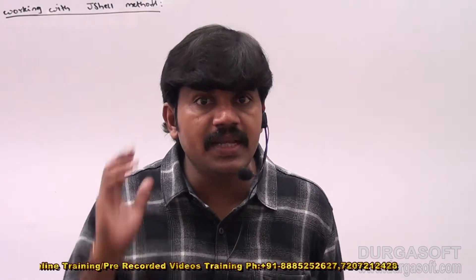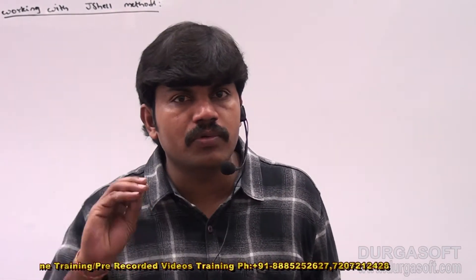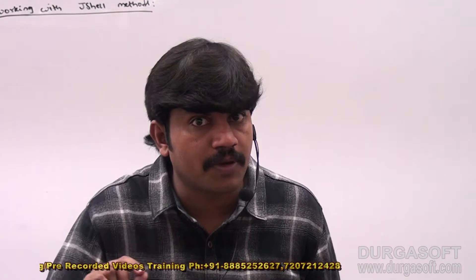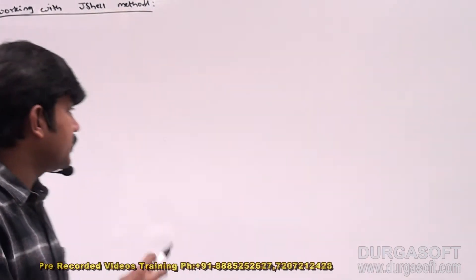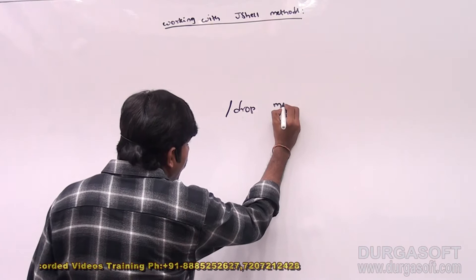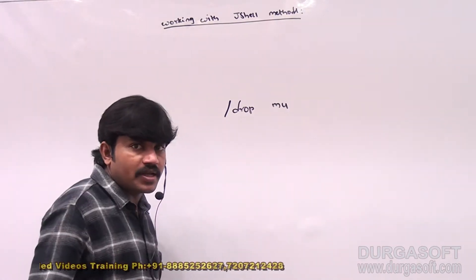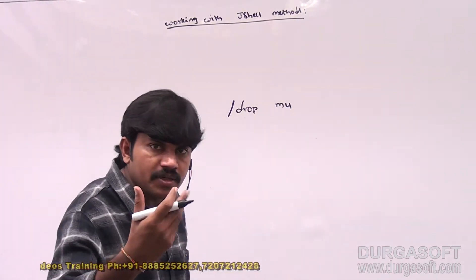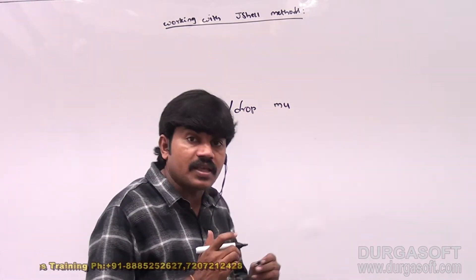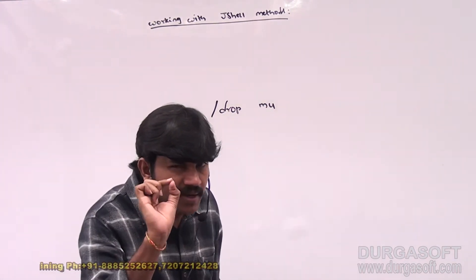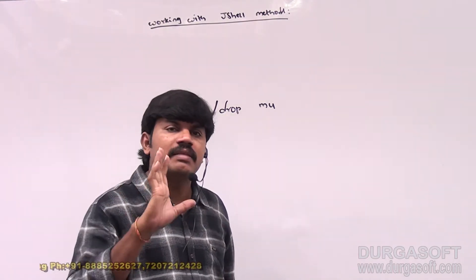How to delete or drop a particular method from the JShell? No problem — we can use the drop command. Use slash drop, for example slash drop m4, and m4 method will automatically be dropped. This method is not available in the JShell clear right.